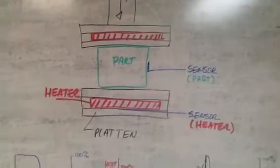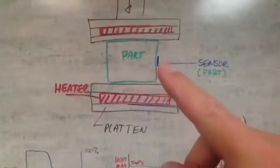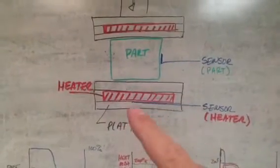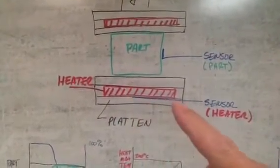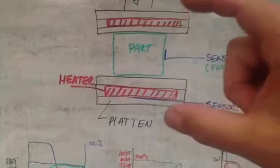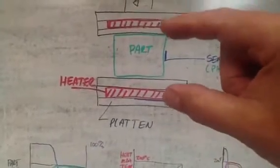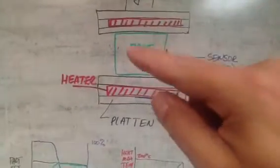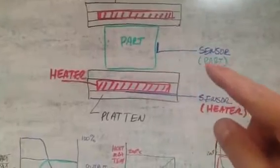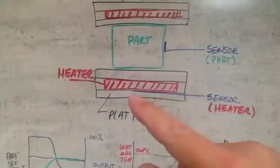So what we're going to do is we're going to monitor not only the part temperature, we're also going to monitor the heater temperature, and we're going to do cascade loop. So you can see what's going on here. This heated platen is putting pressure on and heat into this part, and we're monitoring that part, and we're also monitoring the heater temperature.